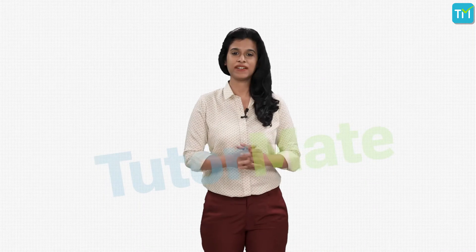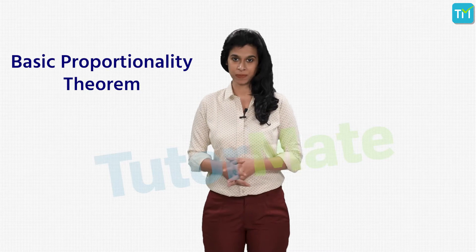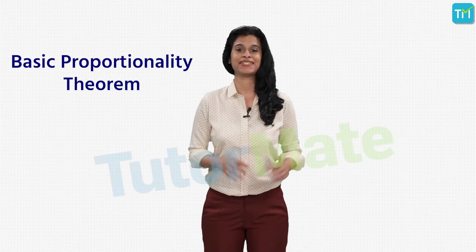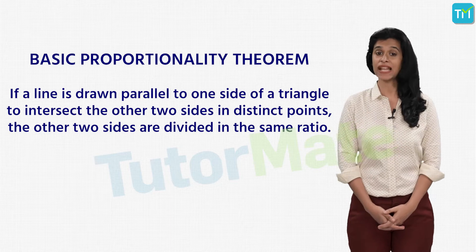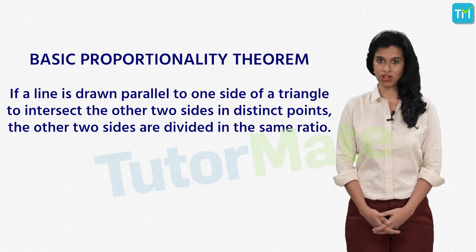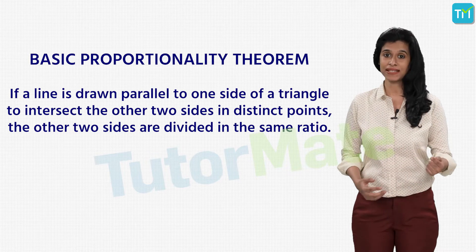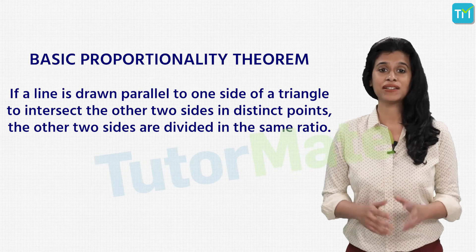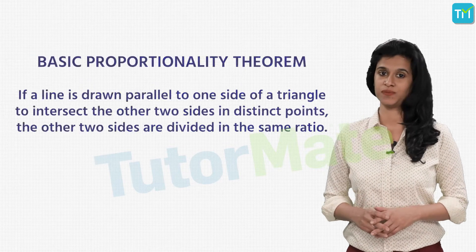Let's kick start this chapter with a very important theorem called the Basic Proportionality Theorem. It is called basic but it has a lot of applications, and that is exactly why you have to understand this theorem really well to be able to solve problems based on triangles. The Basic Proportionality Theorem says that if a line is drawn parallel to one side of a triangle to intersect the other sides in distinct points, then the other two sides are divided in the same ratio. Let's break it down into a more understandable form by taking an example.